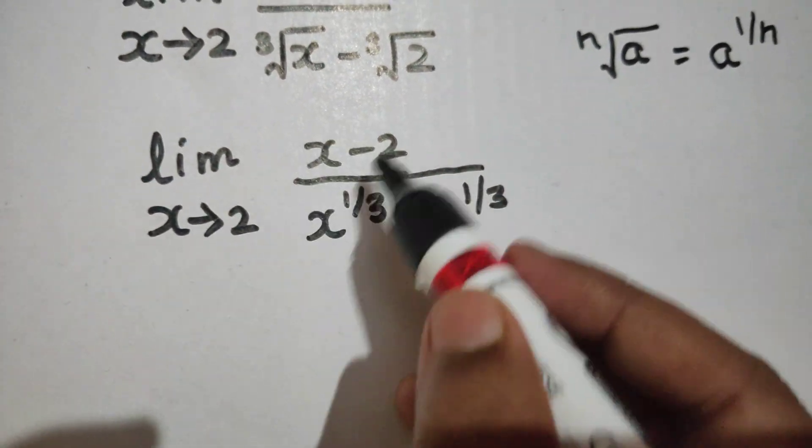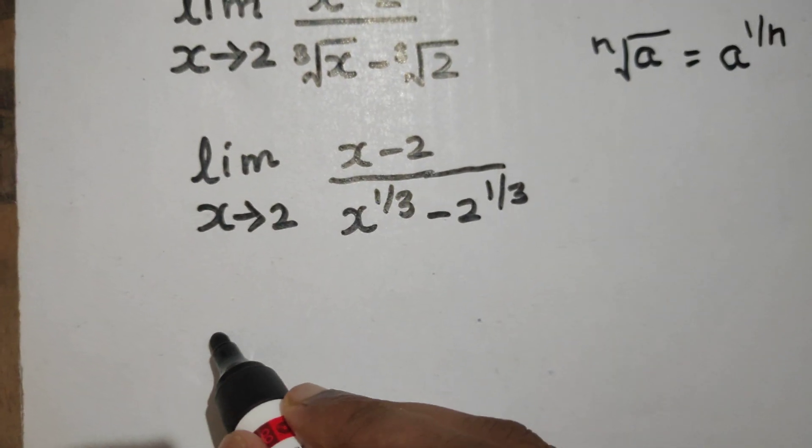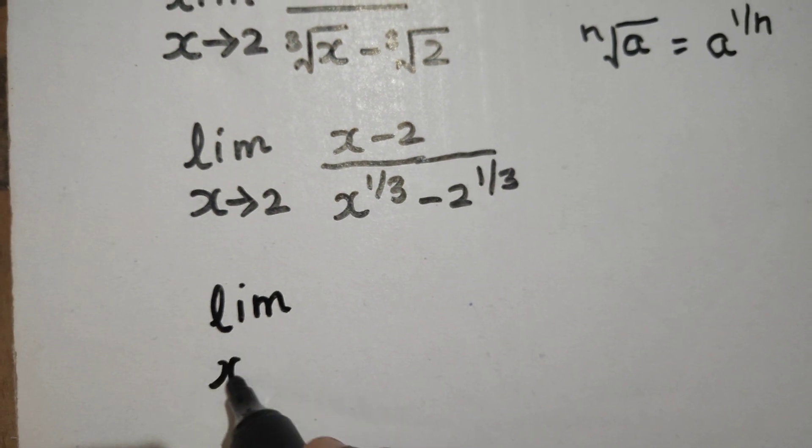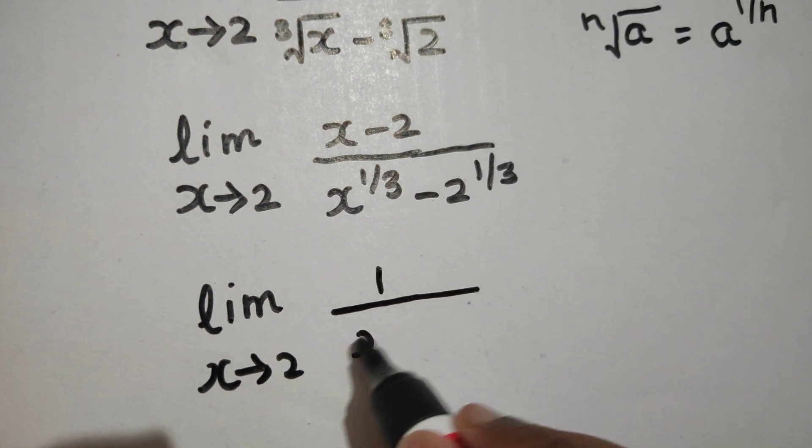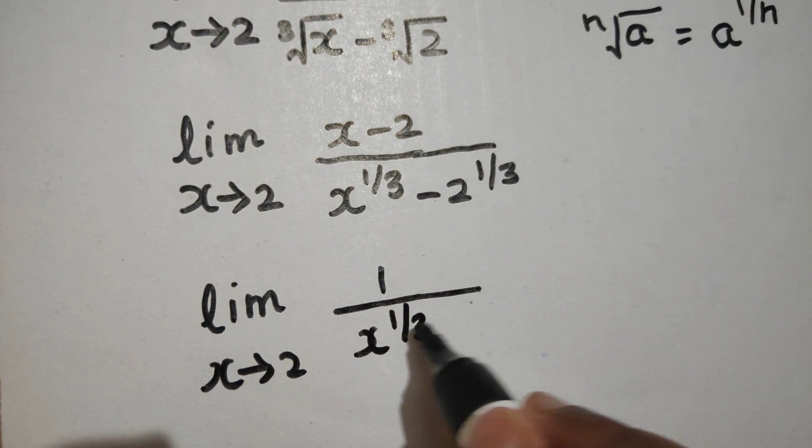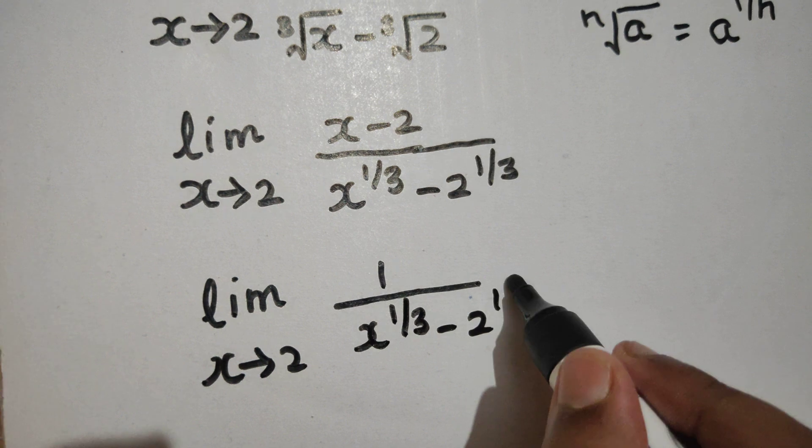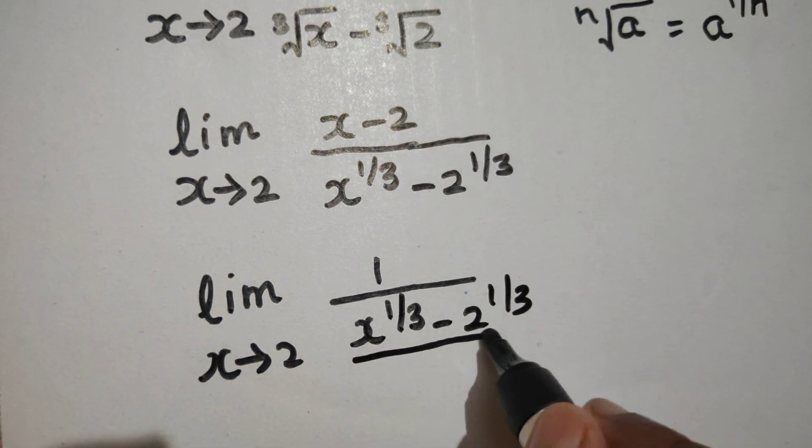Now what I am doing: I am taking this x minus 2 in the denominator, so when it goes in the denominator it will go below this thing. So 1 divided by x power 1/3 minus 2 power 1/3, divided by x minus 2.